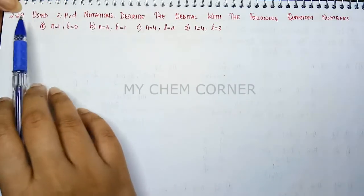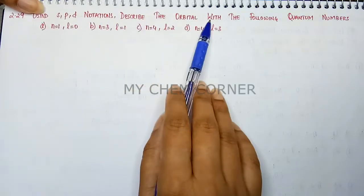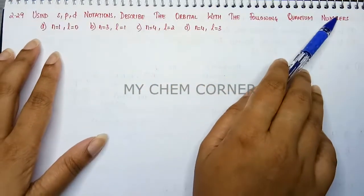Next question is 2.29. Using SPD notations describe the orbital with the following quantum number.